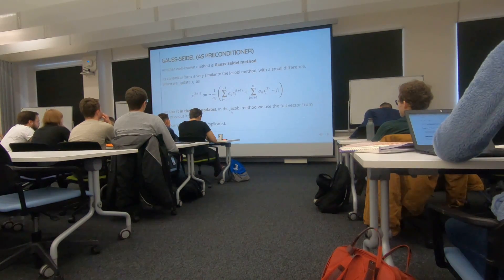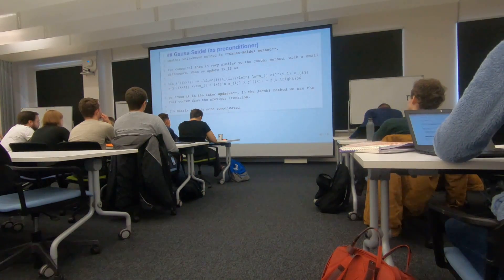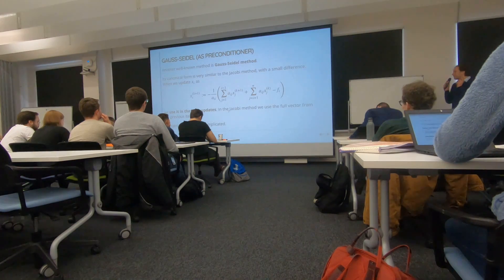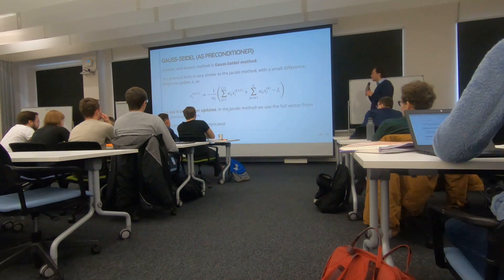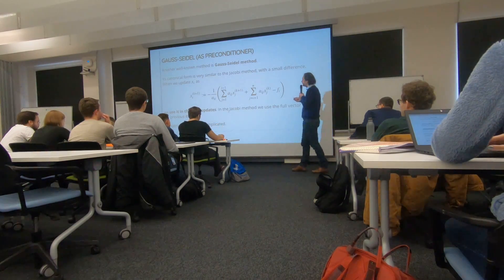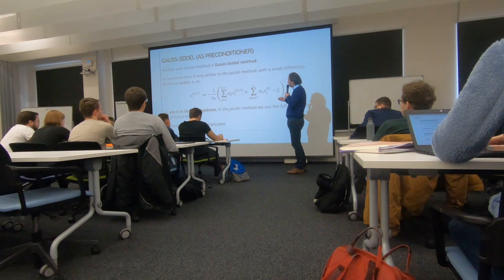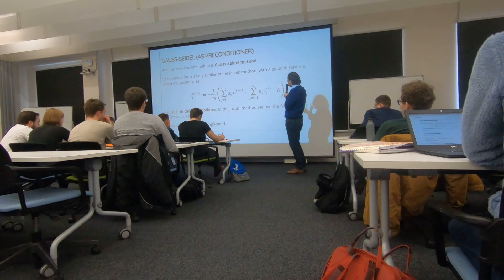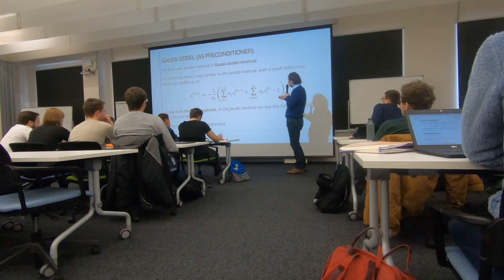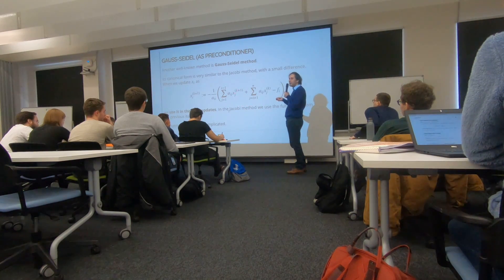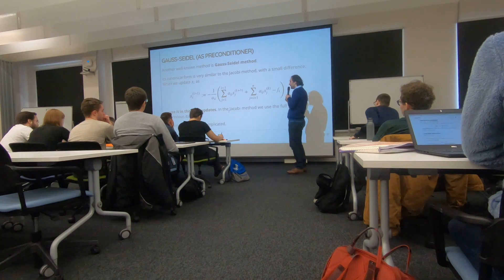In a more advanced way, and this is actually not a very bad method. So what we did, we just took at the right side in the Jacobi method the values of x from the previous iteration.